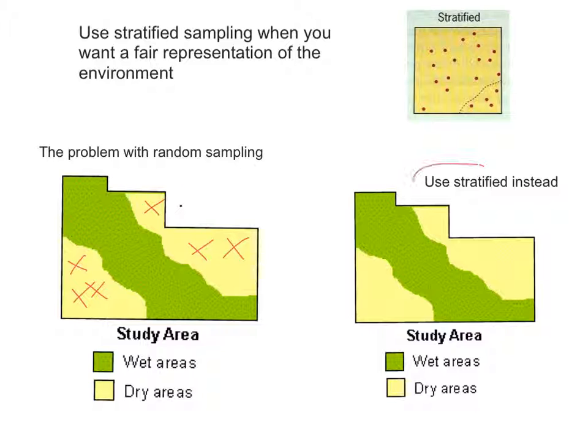So we use stratified sampling instead. And you would ensure that within your study areas you would have a fair representation of both environments. Let's say six in each one.